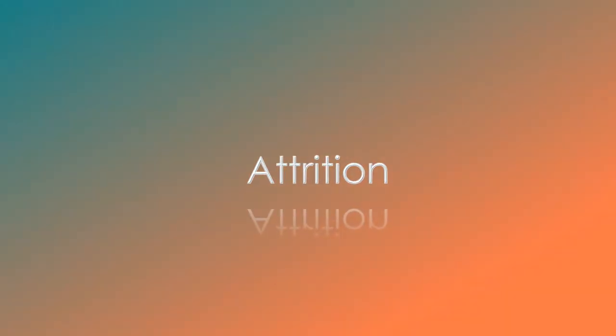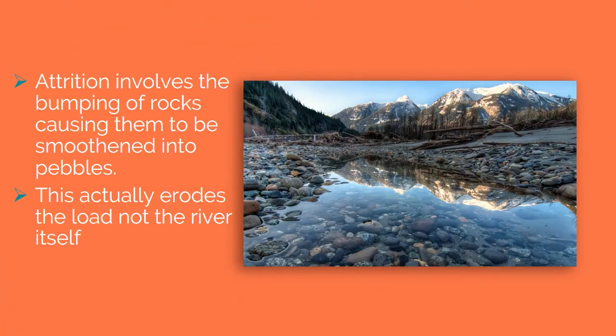Attrition involves the bumping of rocks against each other, causing them to be smoothened. This actually erodes the load, not the river itself.